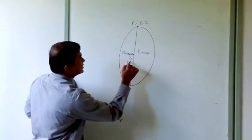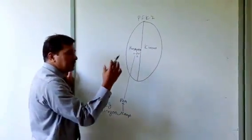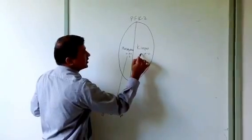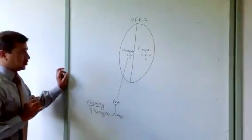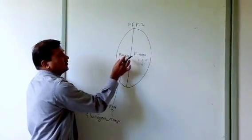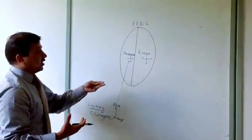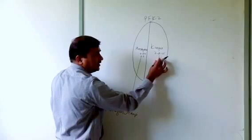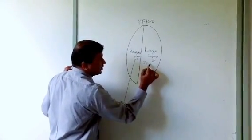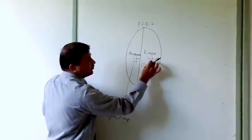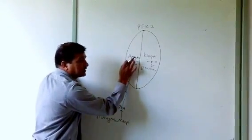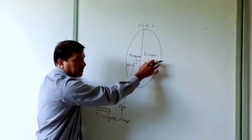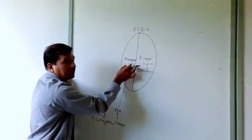Protein kinase A adds phosphate to hydroxyl-containing amino acid residues — such as serine, tyrosine, and threonine — on both the kinase and phosphatase parts of PFK2. Now, when phosphate is added to the kinase part, it becomes inactive. The kinase part of PFK2 is inactive in the phosphorylated state. The phosphatase part of PFK2, however, becomes active under the phosphorylated condition.